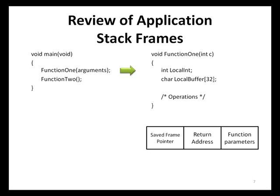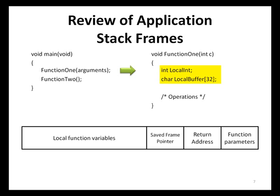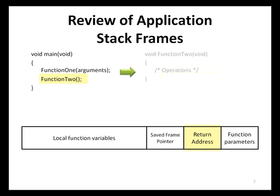Next, the CPU saves a fixed frame pointer, which it uses to reference local function variables and parameters. On Intel processors, this is known as the Extended Base Pointer, or EBP. Finally, the CPU reserves space for any local function variables, such as buffers and integers. In this example, space is allocated for the integer variable called localint and the 32-byte buffer called localbuffer. Function1 executes, and then the CPU loads the SavedReturnAddress pointing to Function2 and executes the next instruction. The stack frame setup and teardown process is then repeated for Function2.